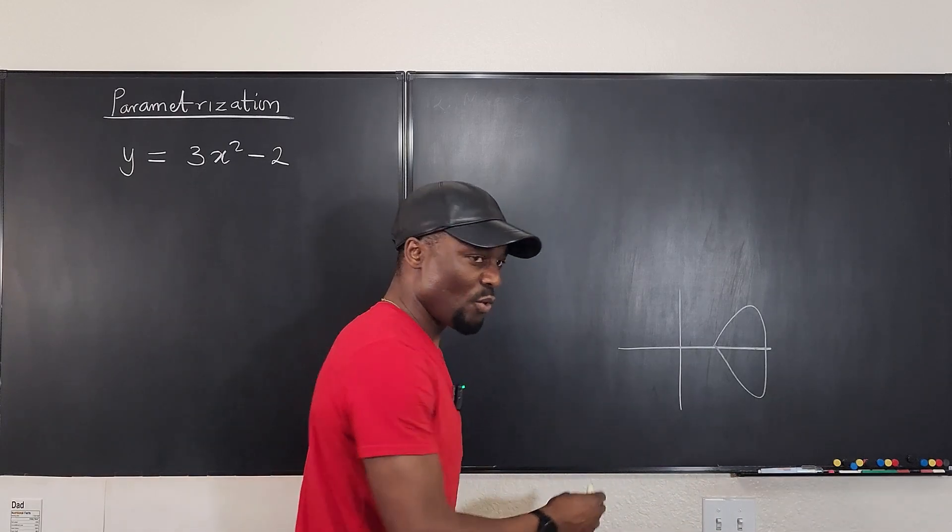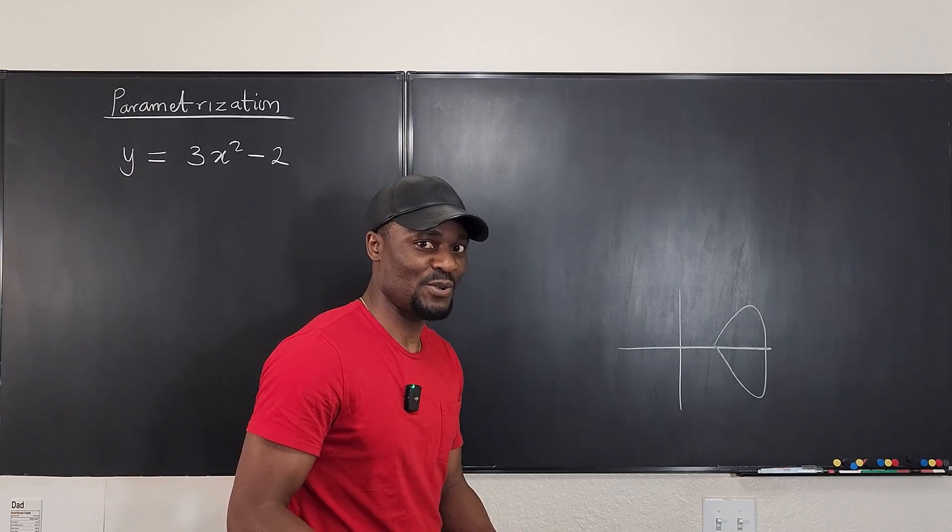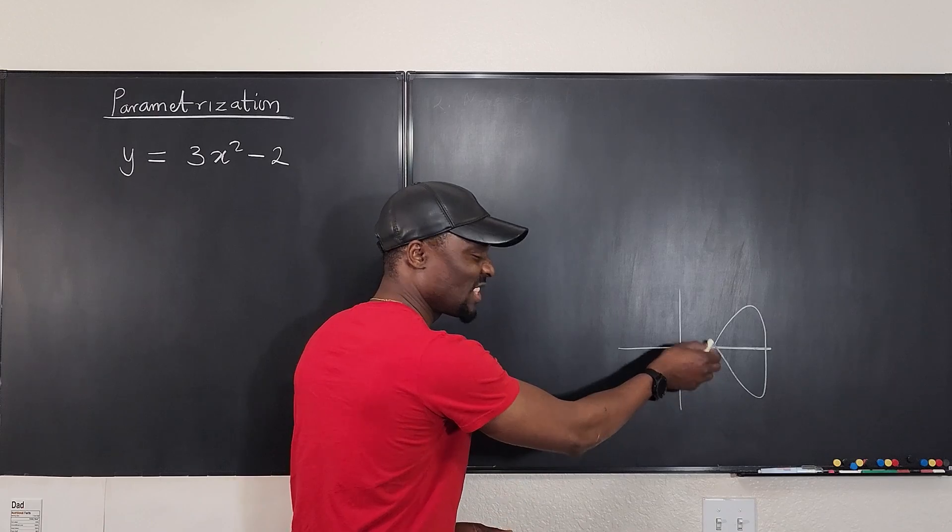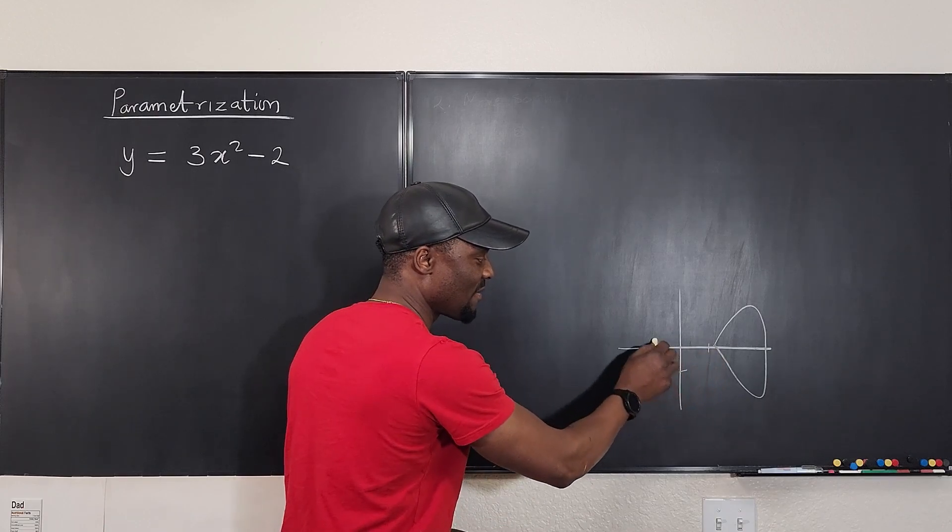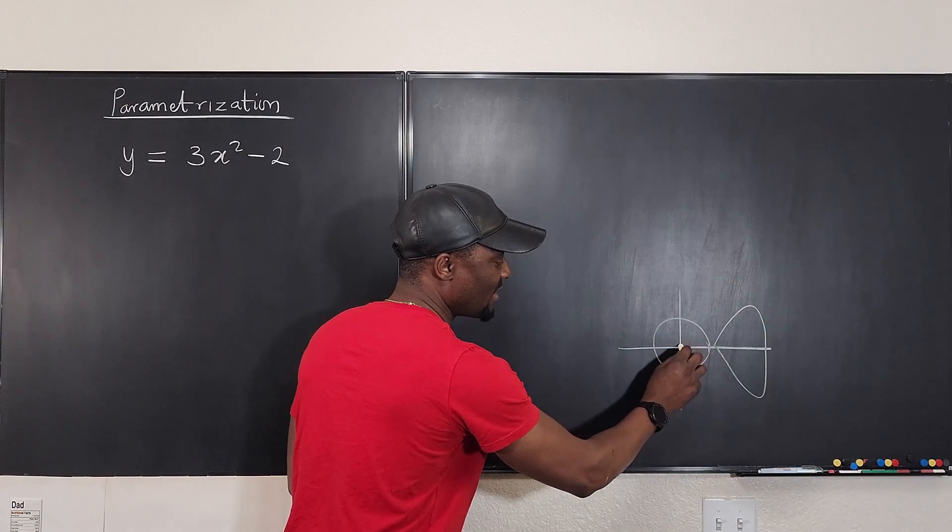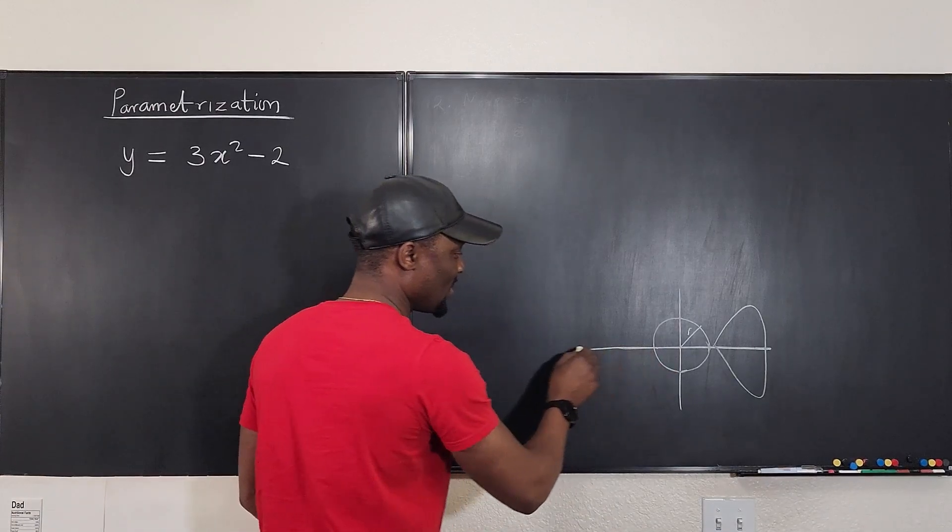And when we plot circles, we don't really plot circles in rectangular form, we usually just sketch. We just know what the radius is and then we just do this. If it's an ellipse, that's the same thing we do.